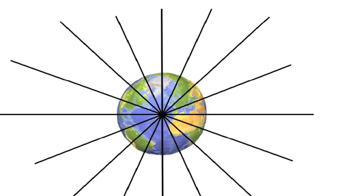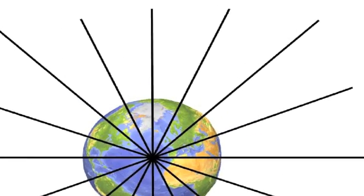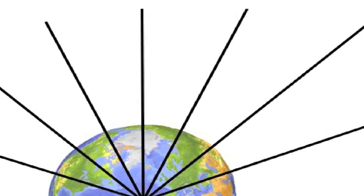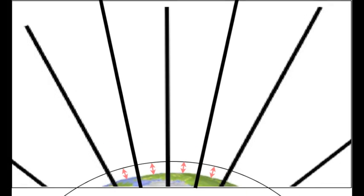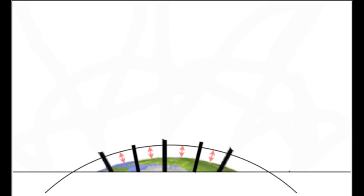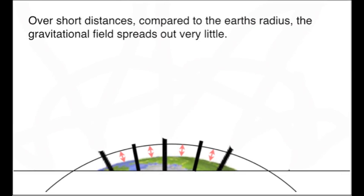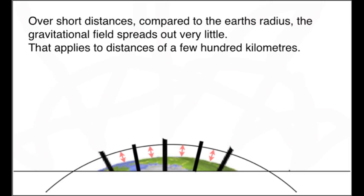The Earth is very large, and we usually lower or raise something close to the Earth's surface. When we have to calculate gravitational energy changes close to the Earth's surface, we don't have to worry too much about the change in the force. Over distances of perhaps up to a few hundred kilometres, the change in the gravitational field strength is almost negligible. The field lines are almost parallel.